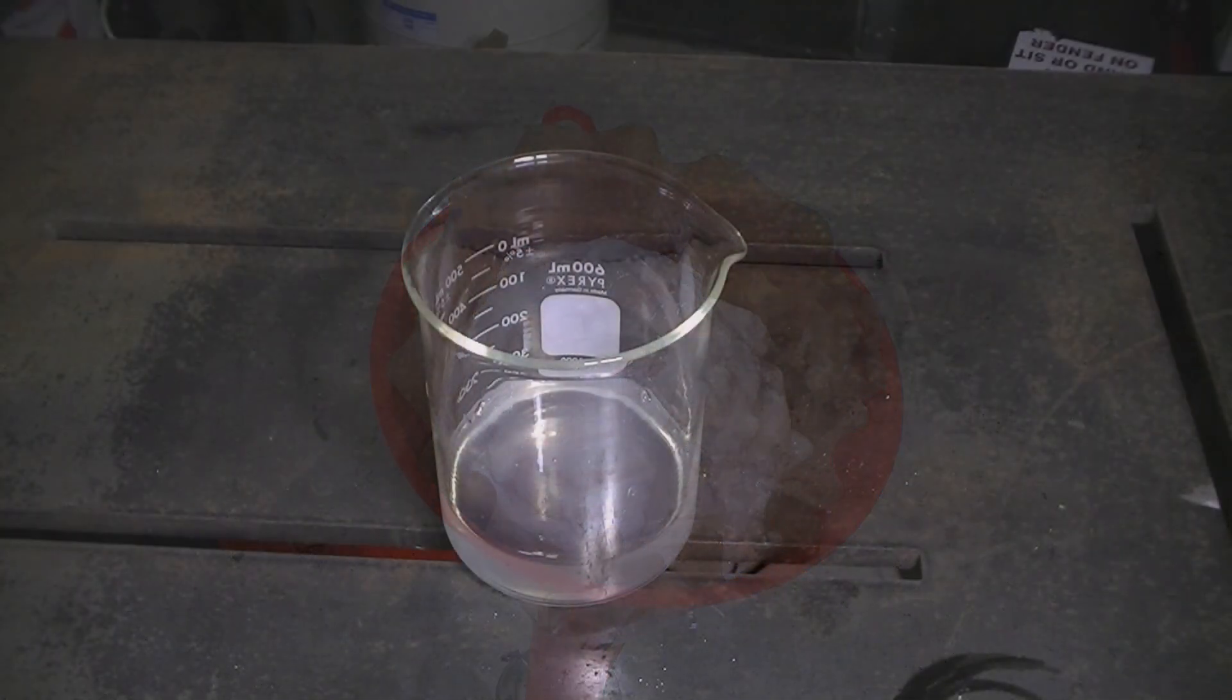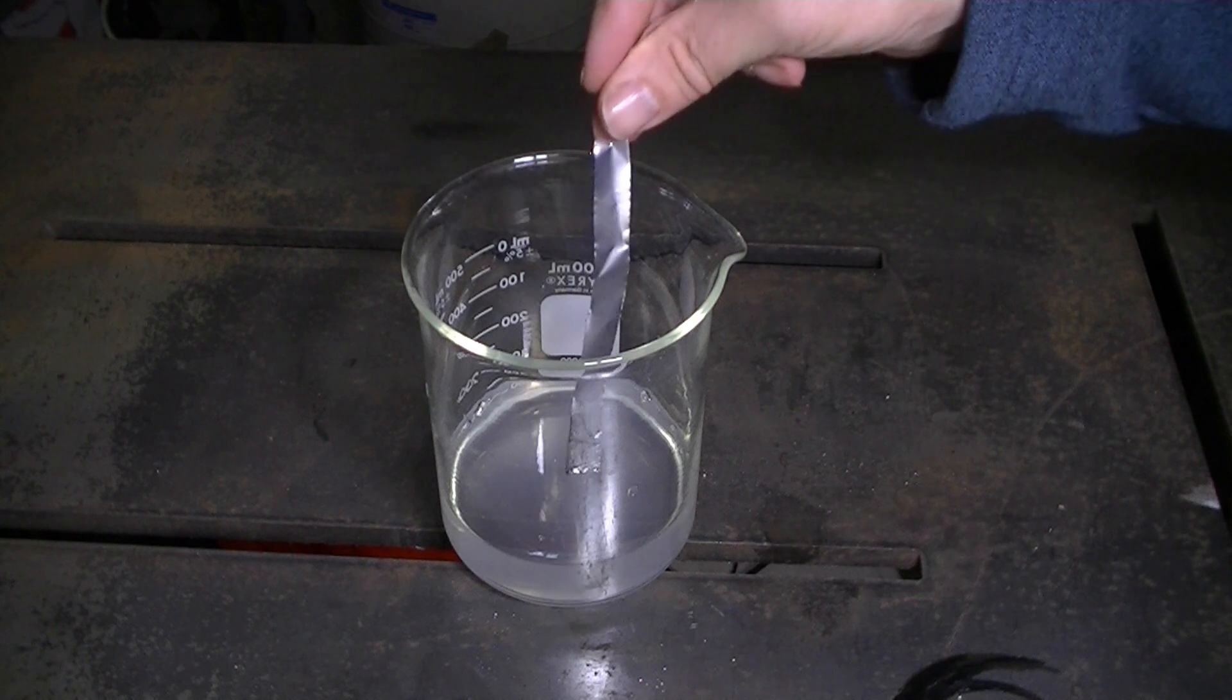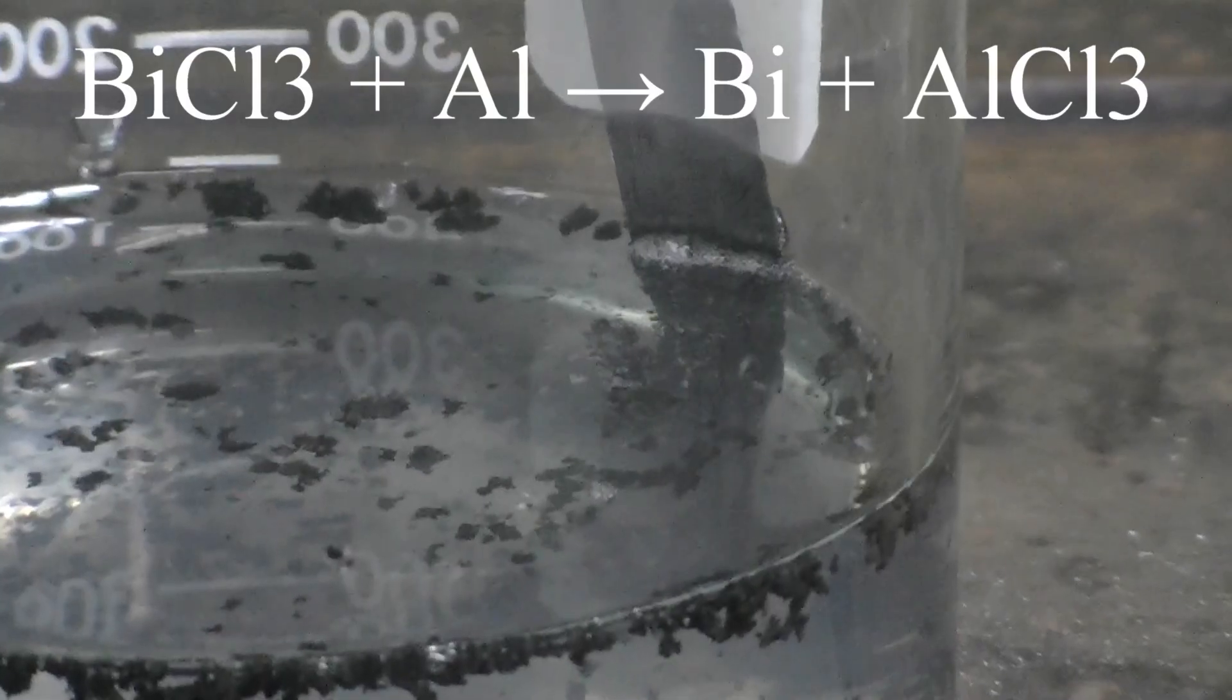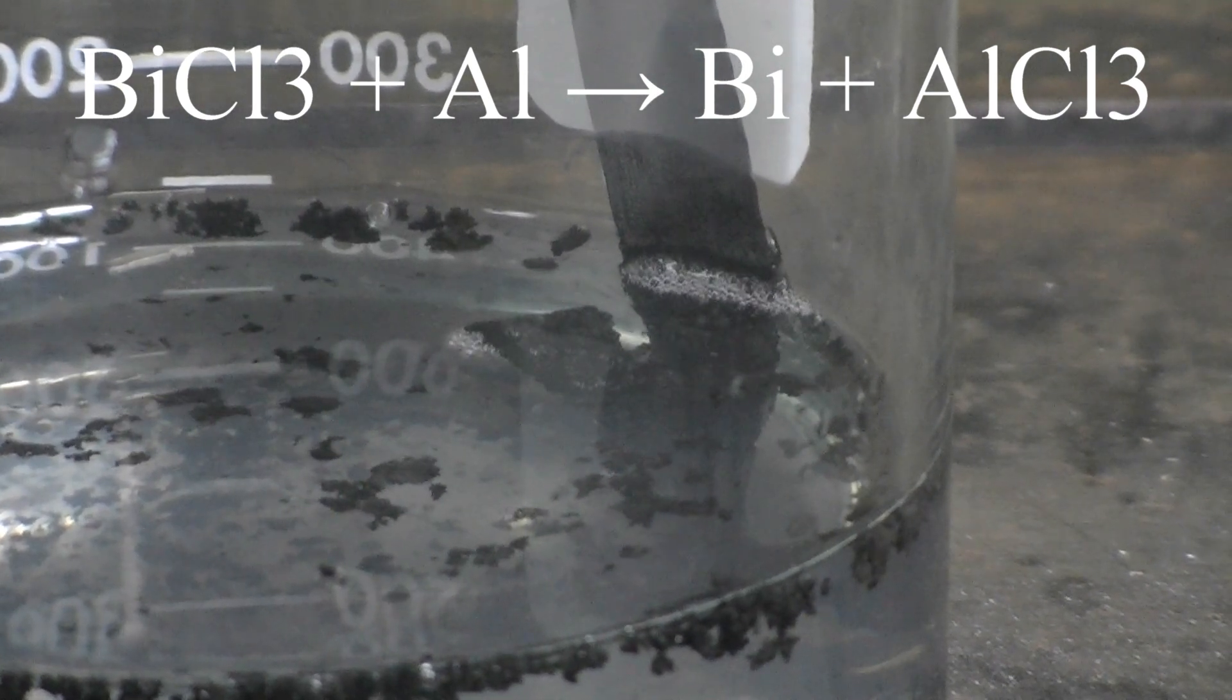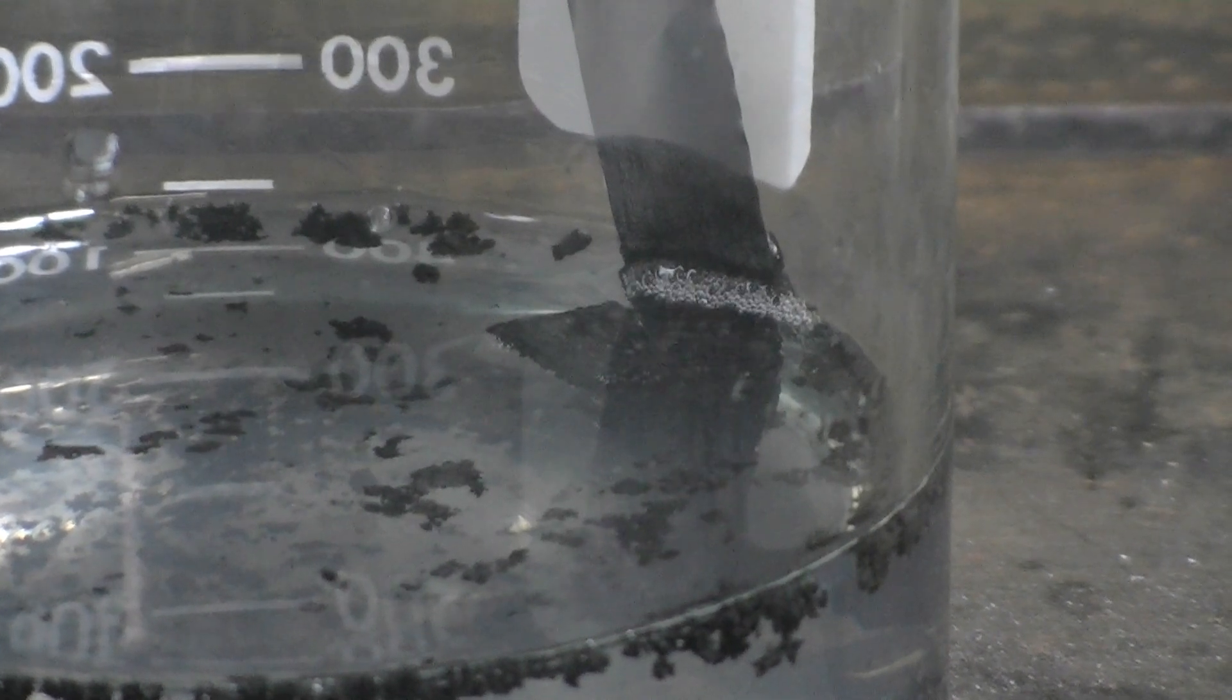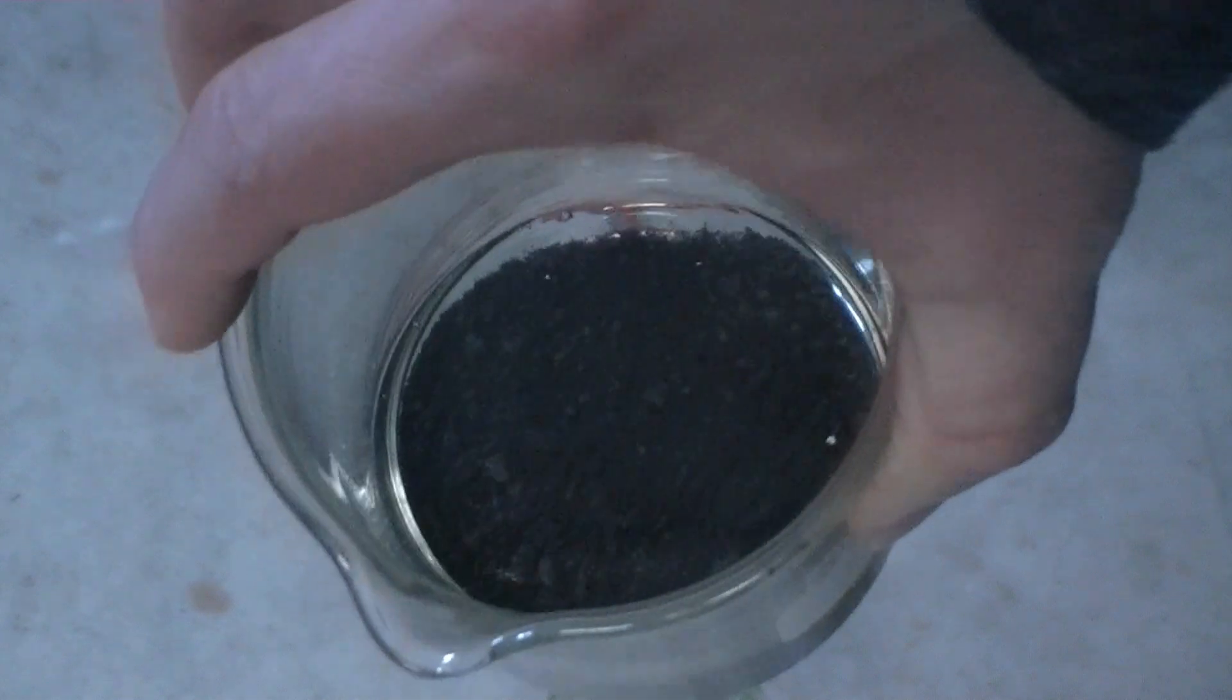So here is our filtered solution, which is clear. It should contain unreacted hydrochloric acid and also bismuth chloride. In order to get the bismuth metal out of solution, we're going to react it with aluminum. Introducing a small amount of aluminum foil results in a displacement reaction. Bismuth chloride is reacting with the aluminum to form bismuth metal, which is precipitating out of solution, and also aluminum chloride. Aluminum chloride is soluble in the liquid.